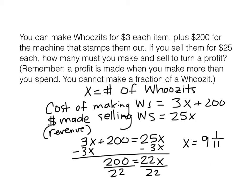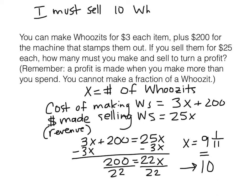So the question is: how many do we have to sell to make a profit? Well, if we sell exactly 9, that's not going to be enough — that will cost slightly more than it makes in revenue. The solution to my equation wasn't really the answer. If 9 and 1 eleventh gets me to break even, then I must sell 10 who's-its. So let's write a sentence: I must sell 10 who's-its.